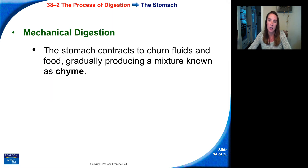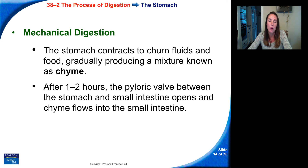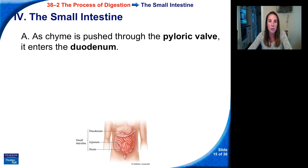Regarding mechanical digestion: the stomach contracts to churn fluids and food, gradually producing a mixture known as chyme. After one to two hours, the pyloric valve between the stomach and small intestine opens and the chyme flows into the small intestine. As chyme is pushed through the pyloric valve, it enters the duodenum.